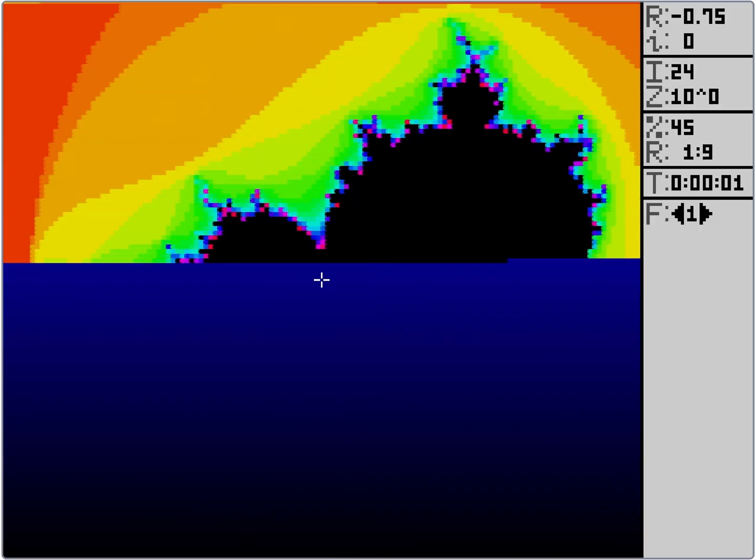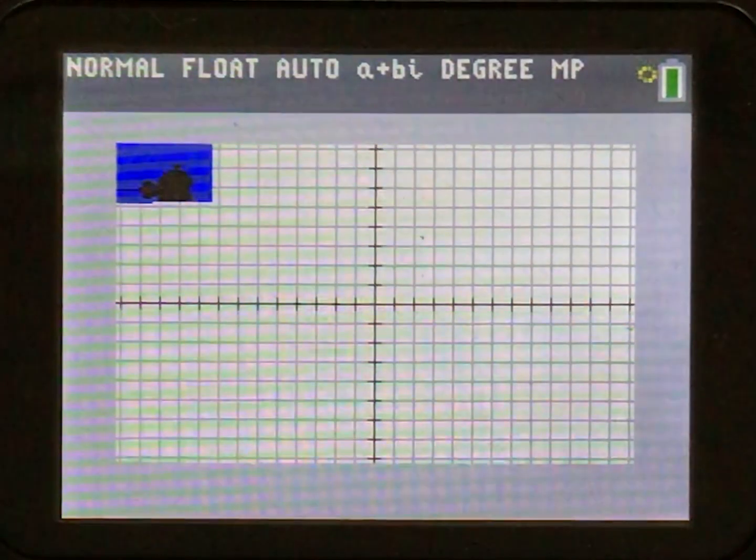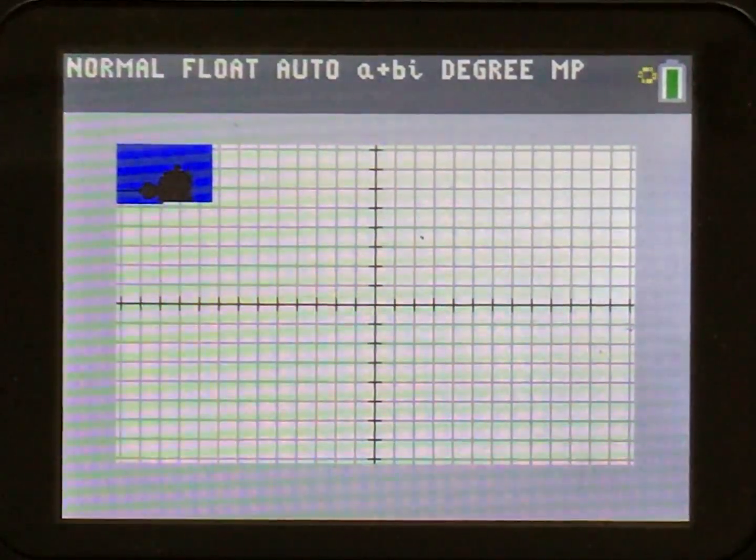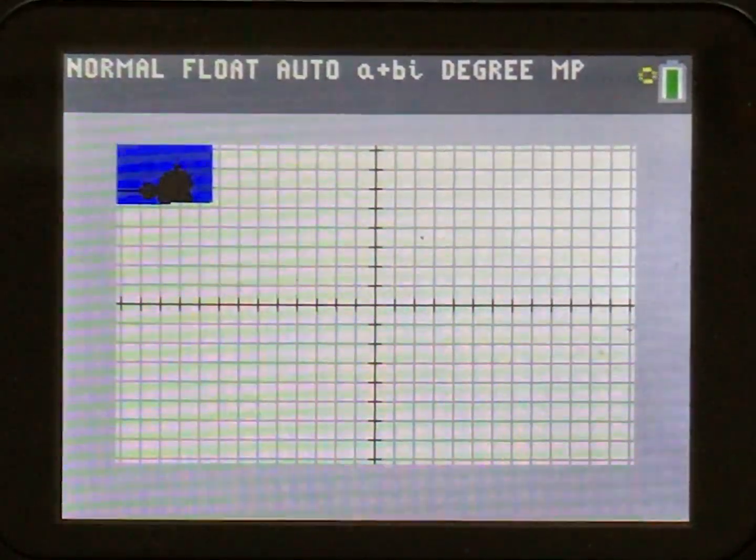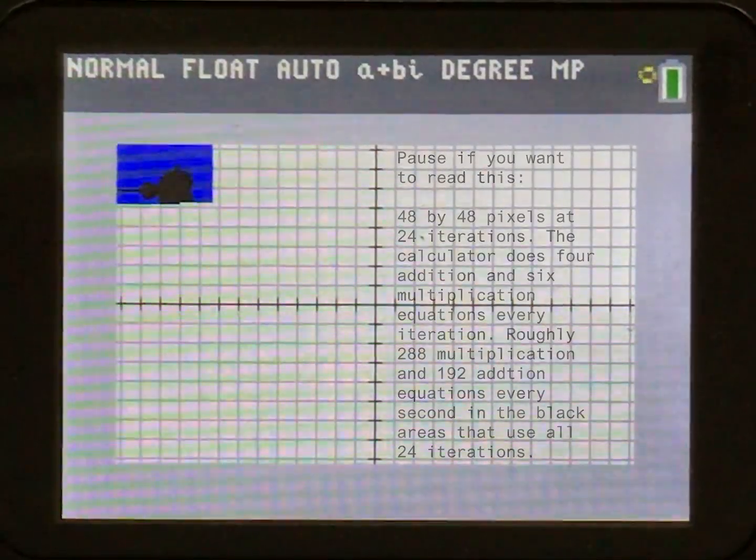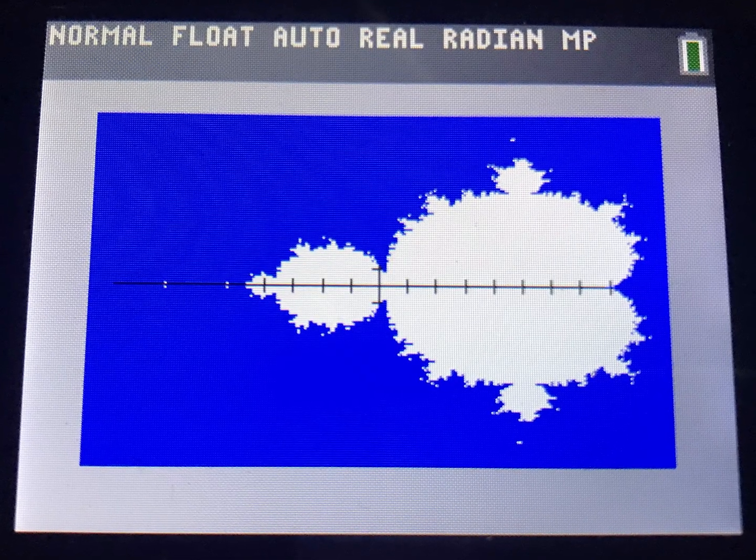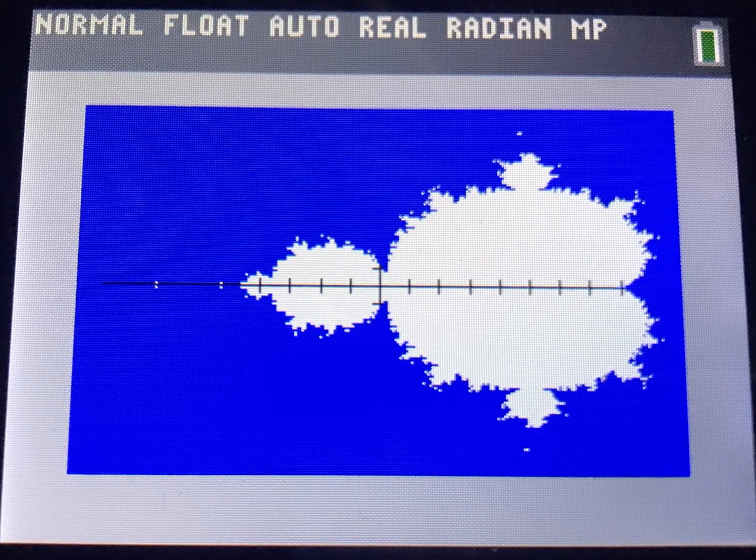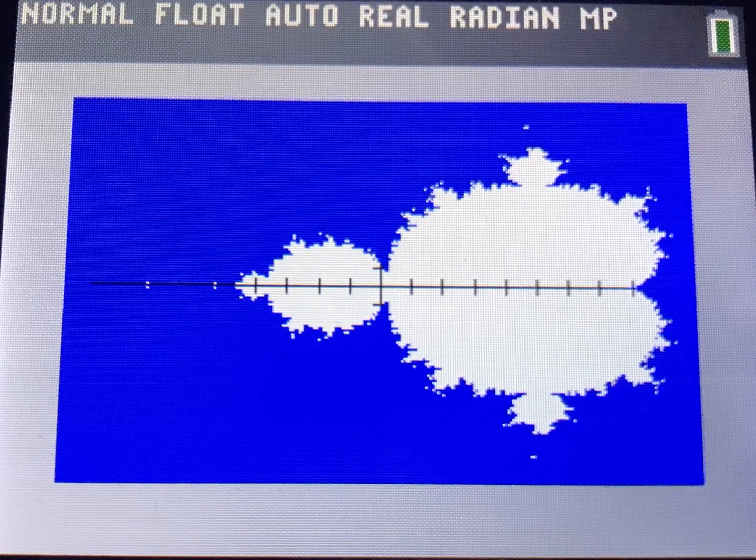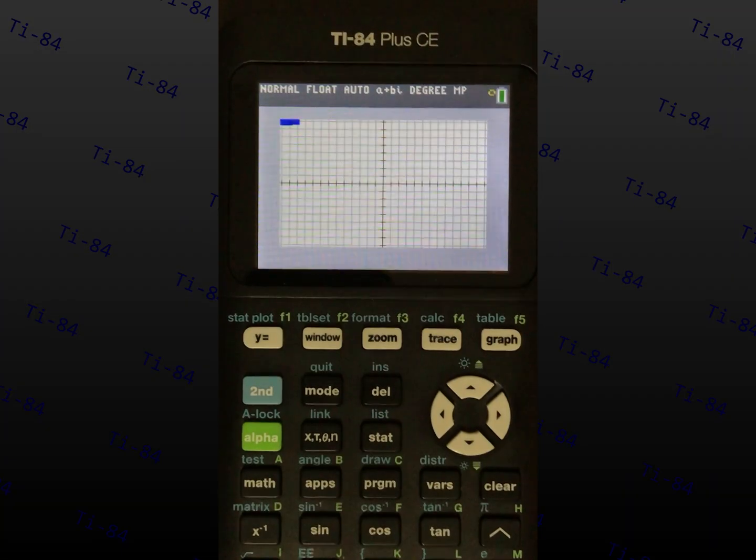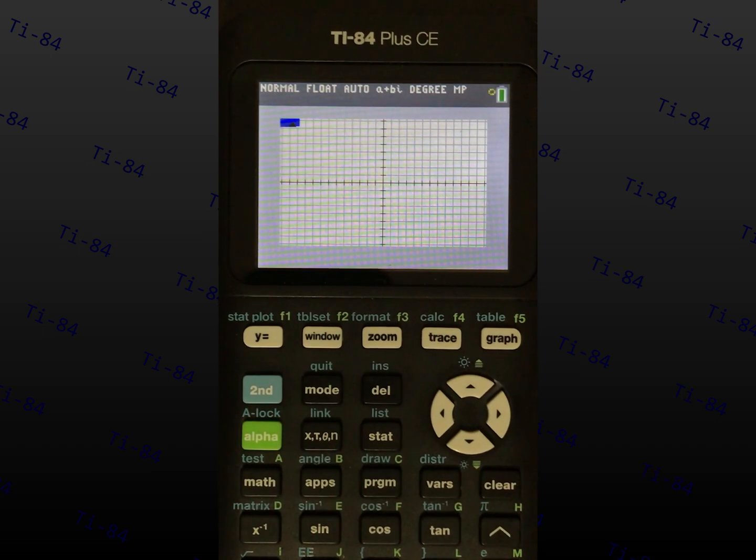On Scratch, it is easy to see individual pixels be drawn, while on TI Basic, it is easy to see individual iterations be calculated. It took the TI-84 around 4 hours to generate a 264x164x32 iteration image. For something the TI-84 can do in a reasonable amount of time, you can get a 48x48x24 iteration image in about 90 seconds.